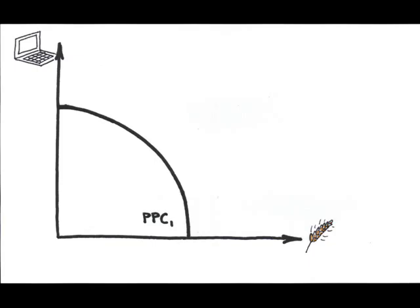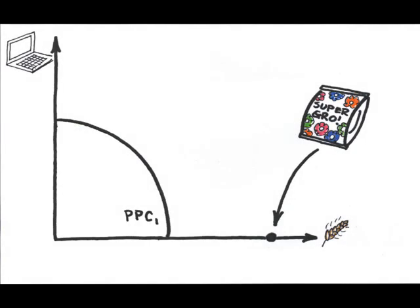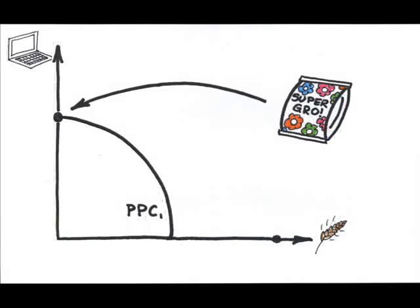Consider this. Suppose we're producing efficiently, using all of our resources operating on PPC1. Then suddenly, someone discovers a fabulous new fertilizer that doubles crop yields. What happens to the possible agricultural output when you use all of the existing resources plus you add this fabulous new fertilizer? You can now produce much more wheat than you could before. But what happens to the manufacturing output when you use all of the existing resources and then add fertilizer? Probably nothing.